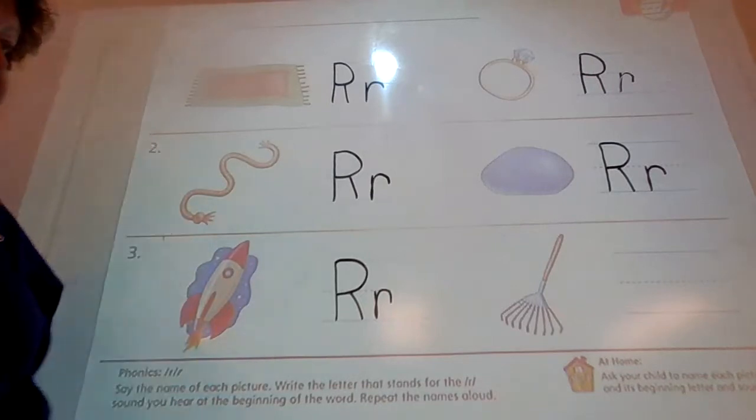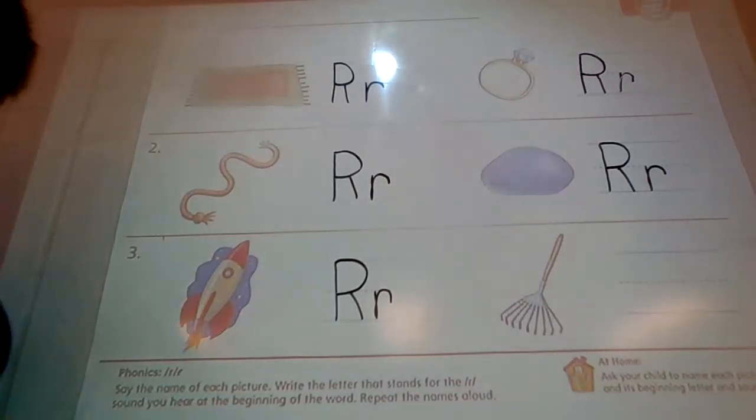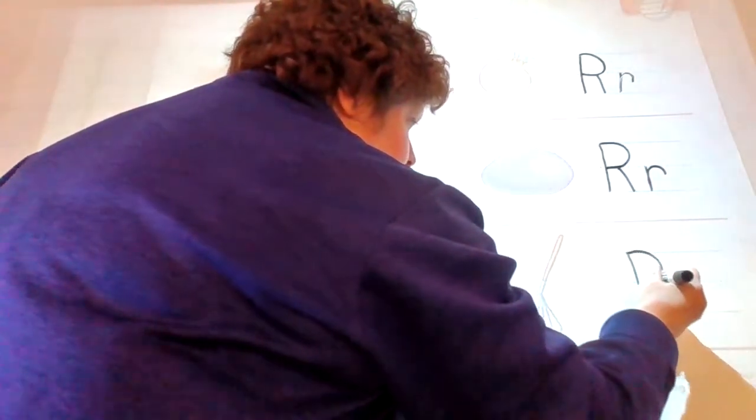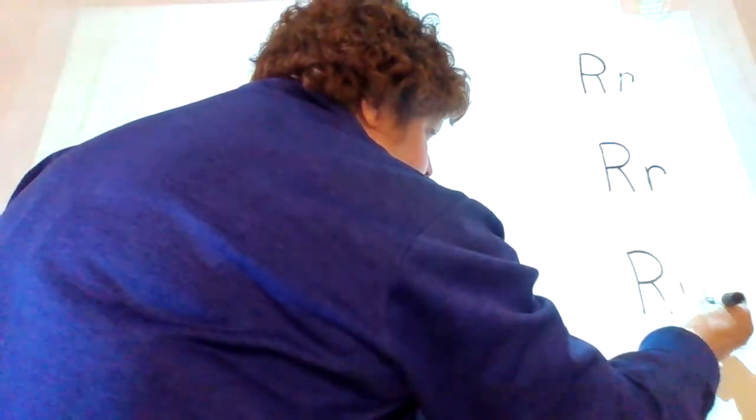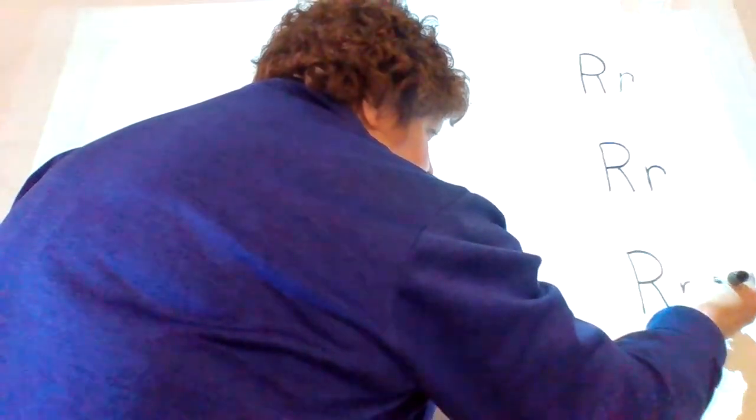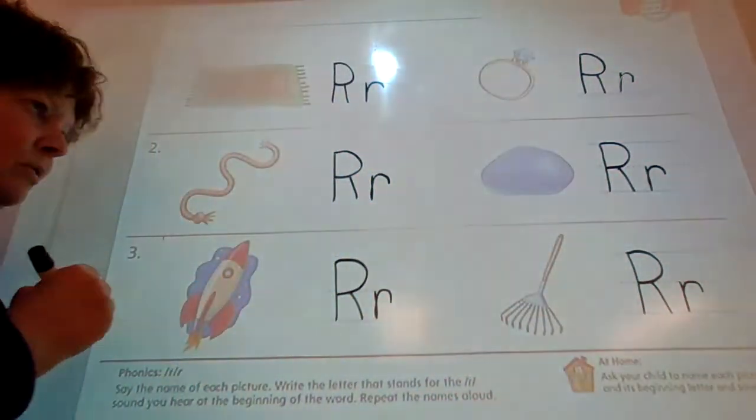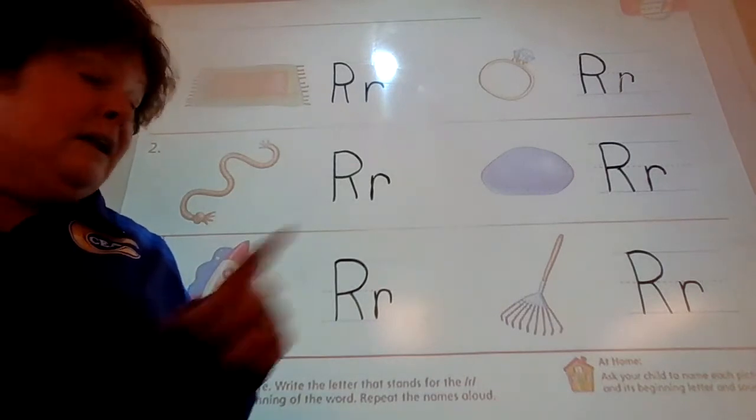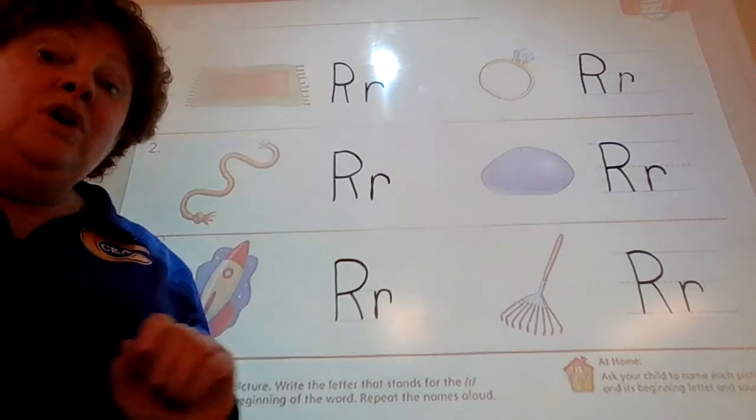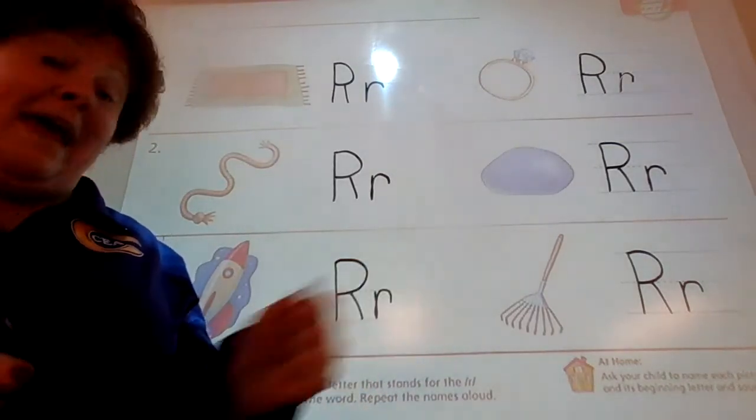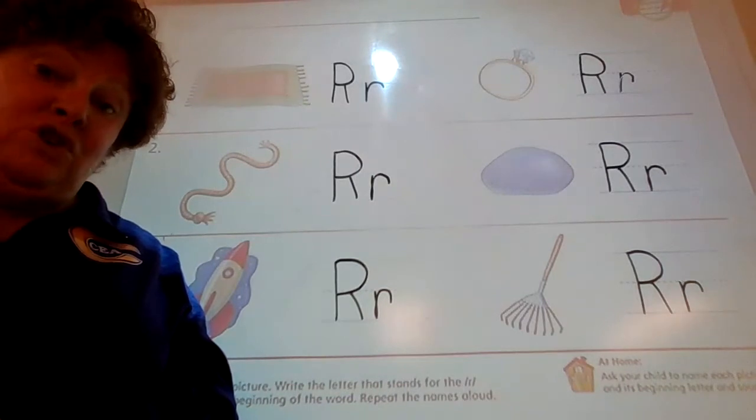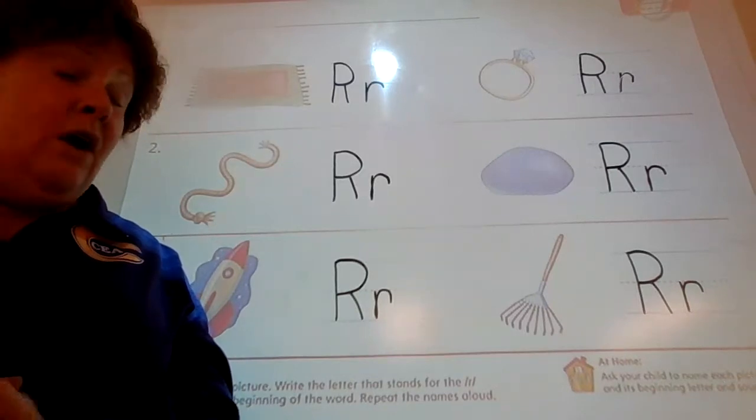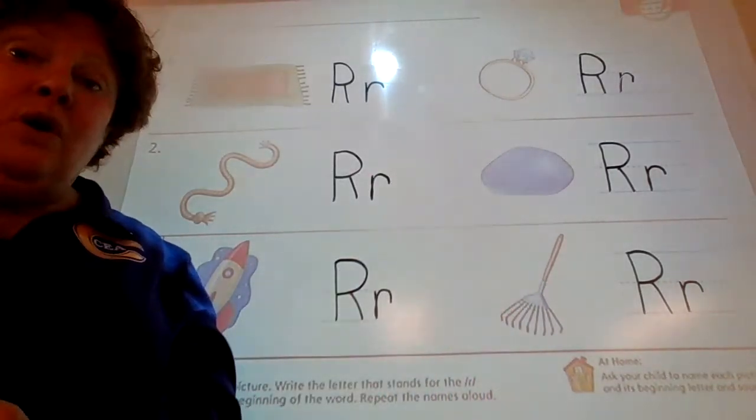And one more. Rake. Same thing. Capital R and lowercase r. Do you see how Ms. Dillon's really taking her time writing those letters, even though I've written letters for a long, long, long time? And even though you can't see the lines on my paper, you can see them on your paper. And I'm actually using the lines on my paper to make sure they look amazing. All right, if you need to pause the video to get caught up on this page, go ahead and do so.